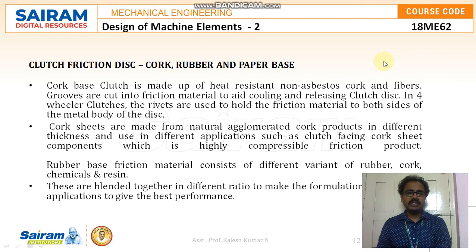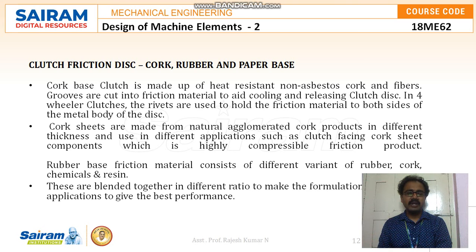Moving to the clutch friction disc — this is made of three different materials: cork, rubber, and paper base. Cork base clutches are made up of heat resistant, non-asbestos cork and fibres, and grooves are cut into the friction materials to help provide cooling and releasing of the clutch disc. In four-wheeler clutches, rivets are used to hold the friction material to both sides of the metal body of the disc. Cork sheets are made from natural agglomerated cork products in different thicknesses for different applications such as clutch facing.